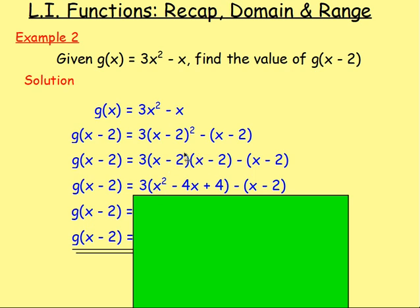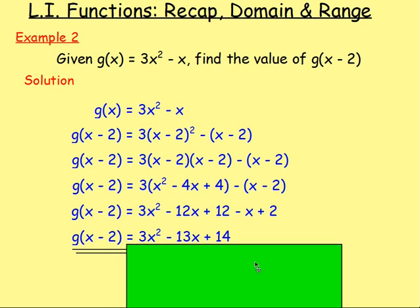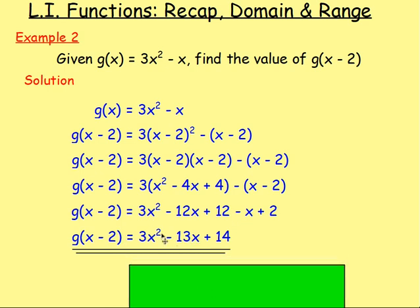So x times x is x squared, that gives us minus 2x minus 2x is minus 4x, and negative 2 times negative 2 gives us plus 4. We've still got minus x minus 2. Think back to BIDMAS where you always do the indices first. From there, multiply out the brackets: 3 times x squared, 3 times minus 4x, 3 times 4. Then be very careful with this bit — we're taking away the x and taking away the negative 2, which will make that a plus 2. You could treat it as just 1 in front of the brackets and multiply out: negative 1 times x is negative 1x, negative 1 times negative 2 makes plus 2. From there, gather your like terms — the x squareds, the x's and the numbers — and that would be your answer.